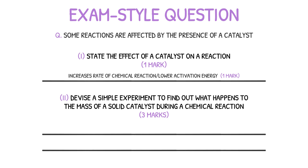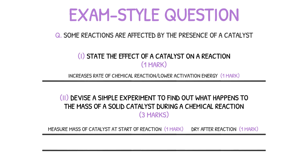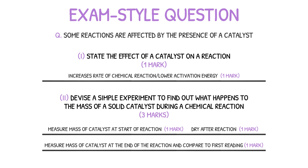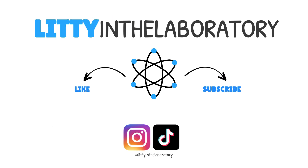At the start of the reaction we will measure the mass of the catalyst — that's our first mark. Our second mark is for stating that once the reaction is complete we will dry off the catalyst to remove any excess liquid, which may affect the accuracy of your results. Our final mark is for stating that at the end of the reaction we will measure the catalyst again and compare the reading to the very first reading taken. So how did you do on this question? Let me know in the comment section below.